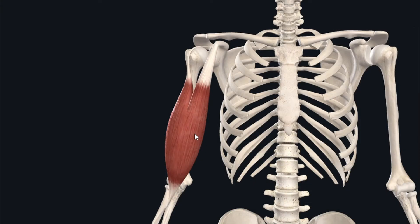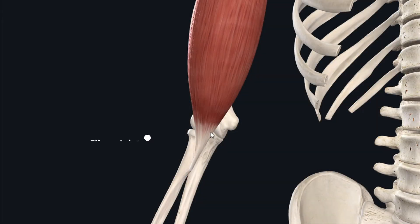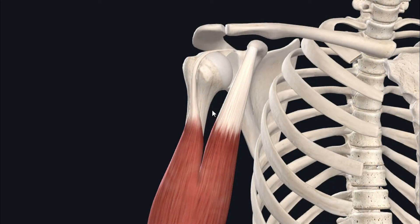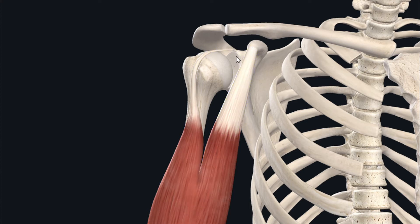The biceps brachii is known as a biarticular muscle because it travels across two joints: the shoulder or glenohumeral joint and the elbow joint. This muscle has two heads of origin — the long head and the short head — and these two heads originate from different anatomical structures on the scapula.